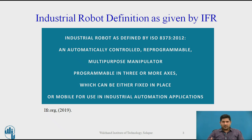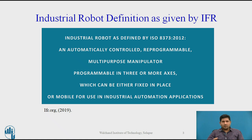This definition is quite comprehensive and gives you the scope of what basically an industrial robot is. It should be reprogrammable — that is very clear. Second, multipurpose, so it's flexible when it comes to applications. It should be programmable in 3 or more axes — so it's not just one-directional programming; you should be able to program it in 3 or more axes.